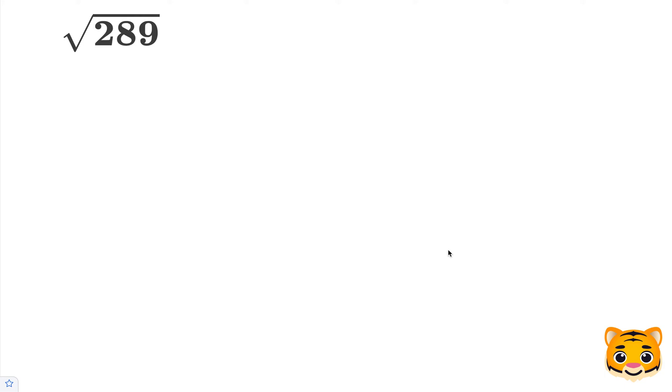In this example, we will be finding the square root of 289. 289 is an example of a perfect square.